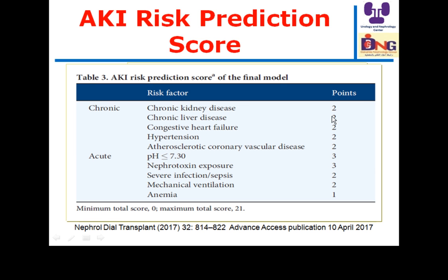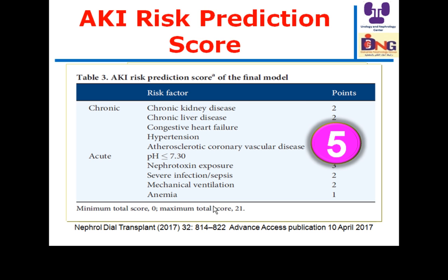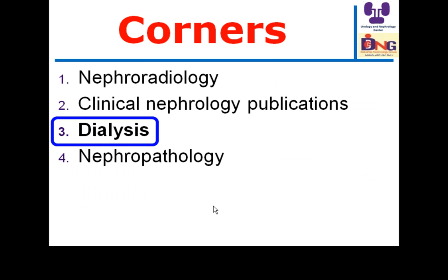In this prediction score: chronic kidney disease scores 2 points, chronic liver disease 2 points, congestive heart failure, hypertension, and atherosclerotic disease each score points. If pH is less than 7.3, this is a 3-point score. Other factors include nephrotoxin exposure, severe infection, mechanical ventilation, and anemia. The total score ranges from 0 to a maximum, and a score of 5 points indicates the patient is at risk for acute kidney injury. We need validation of all these prediction models before assessing their clinical usefulness.